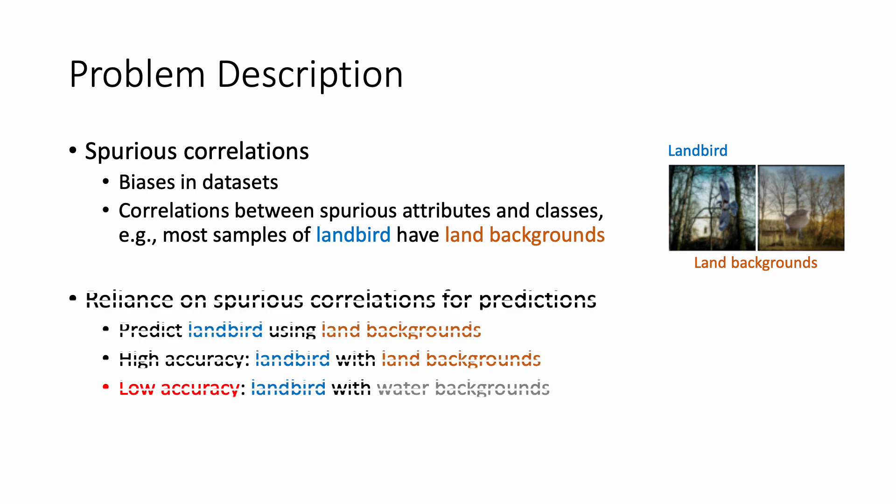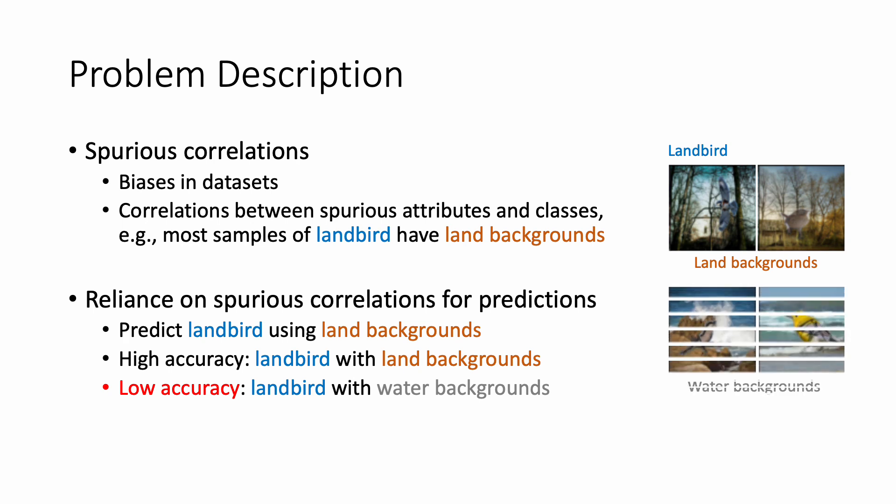Machine learning models tend to rely on spurious correlations for predictions, such as predicting land birds using land backgrounds. Although this learning strategy can result in high accuracy on images such as land birds with land backgrounds, the accuracy will drop significantly on images where the correlations no longer hold, such as on land bird images with water backgrounds.